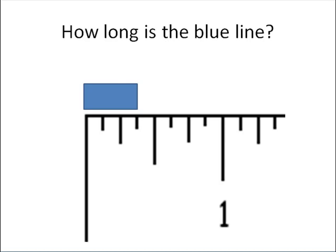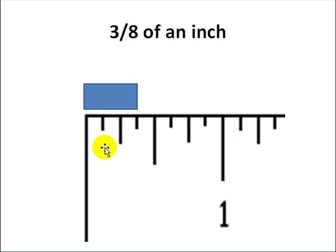So here, how long is the blue line? Well, it is one, two, three, and these particular marks are eighths. You know they're eighths because there are eight of them between the zero and the one: one, two, three, four, five, six, seven, eight. So there are eight of those, so this happens to be three-eighths of an inch.